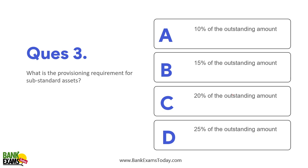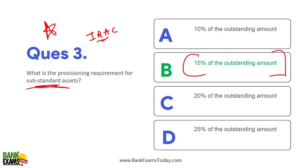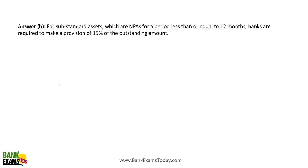What is the provisioning requirement for substandard assets? According to IRAC norms, the provisioning requirement for substandard assets is 15% of the outstanding amount. Substandard assets are NPAs for a period less than or equal to 12 months — more than 90 days but less than 12 months.